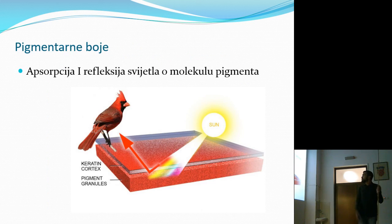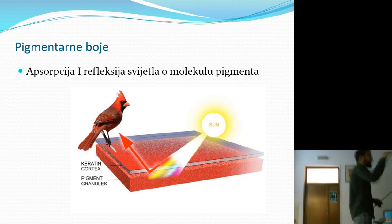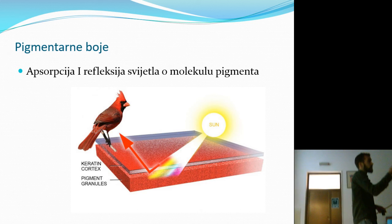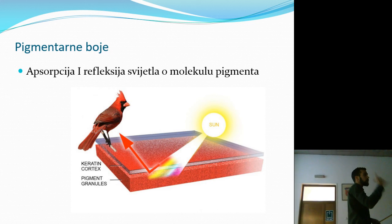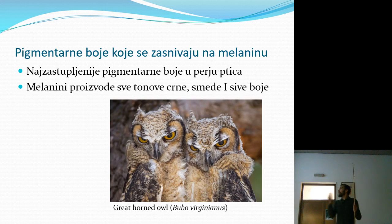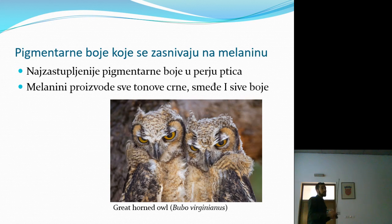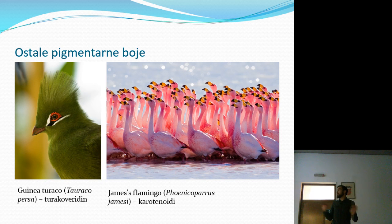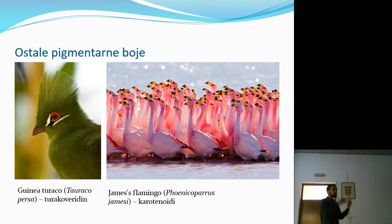Prve su pigmentarne boje. Imate pero, na površini pera imate molekulu pigmenta, svjetlo udari u tu molekulu, određeni spektar svjetla se upije, a određeni specifični se odbije i to je boja koju mi vidimo. Najzastupljeniji su melanini koji proizvode smeđu, sivu i crnu boju. Postoje i turakoverdin koji proizvodi samo zelenu boju u toj specifičnoj porodici ptica, te karotenoidi koji proizvode žarke roze, narančaste i crvenkaste boje, što vidimo kod flaminga.